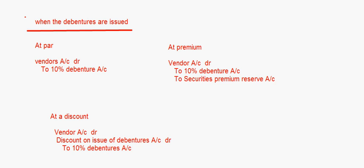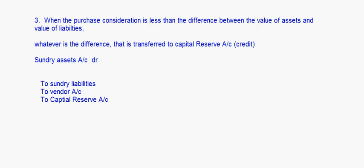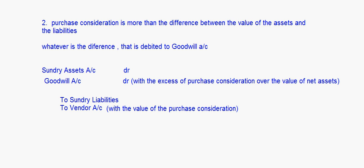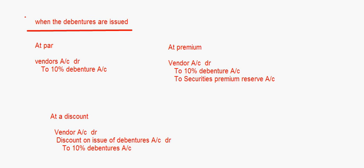So basically, either of these two entries will come — one for purchasing assets or one for purchasing a business — and when they are issuing the debentures, debentures may be issued at par, at premium, or at a discount. These are the journal entries for issue of debentures for consideration other than cash.